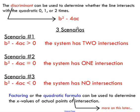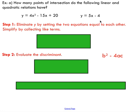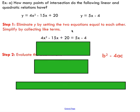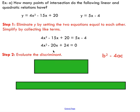First I want to show how to apply the discriminant to these problems. The problem asks: how many points of intersection do the following linear and quadratic relations have? The first step is to eliminate y by setting the two equations equal to each other. We can do this because at the points of intersection, the y-values are the same. Then we collect like terms, bringing all x-terms to one side, and we end up with a new quadratic relation.